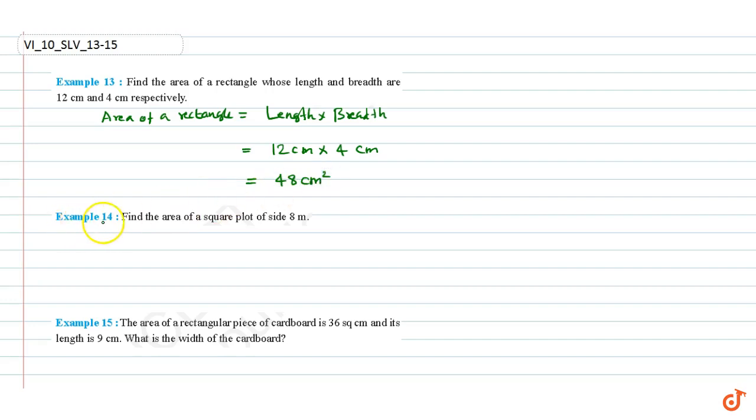Example 14: Find the area of a square plot of side 8 meters. We know that area of a square equals side times side. This is equal to 8 meters times 8 meters, which is equal to 64 square meters.